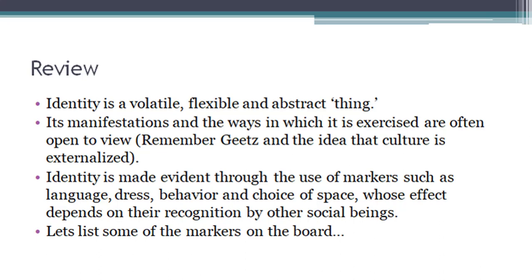Identity ki bahut se markers hain. There are markers which are: language, dress, behavior, and choice of space. For example, agar mein ek insaan ki identity ko dekh rahi hoon to mein uske markers dekhungi — markers are the things that show something. Uske kya language hai, uske language show karegi ke uski identity kya hai. Dress codes are different — every area is different: Turkey is different, India is different, Pakistan is different. Behaviors are different, choice of space is different.